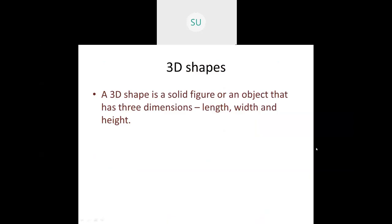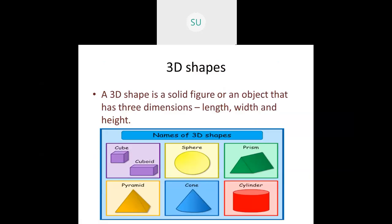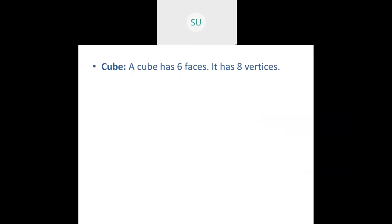A 3D shape is a solid figure or object that has three dimensions: length, width, and height. Plane figures have only two dimensions — length and width — but 3D shapes have three. The various examples of 3D shapes include a cube, cuboid, sphere, prism, pyramid, cone, and cylinder. We'll see these shapes one by one.